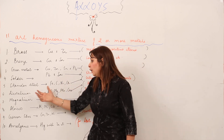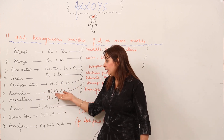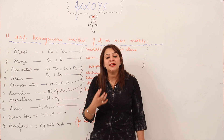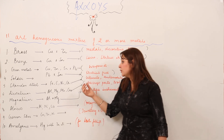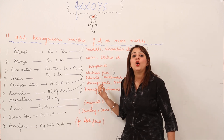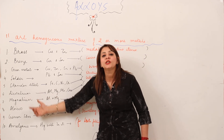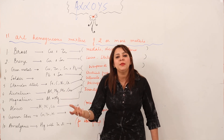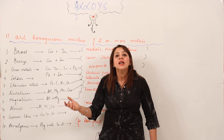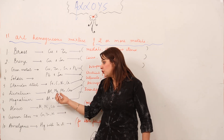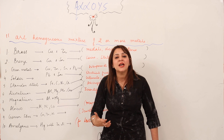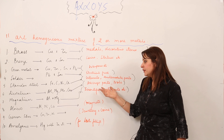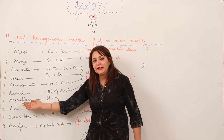Duralumin plays a very important role — it is an alloy of aluminium in which aluminium is mixed with magnesium and copper. It has the property of being lightweight. Due to this property, it is used in making aircraft parts. We cannot use aluminium alone for aircraft parts, but when mixed with magnesium and copper, its properties improve enough to be used in making aeroplane parts.